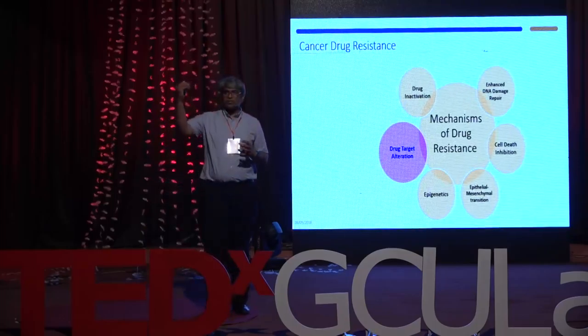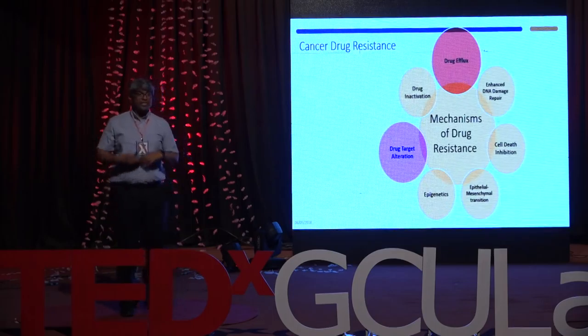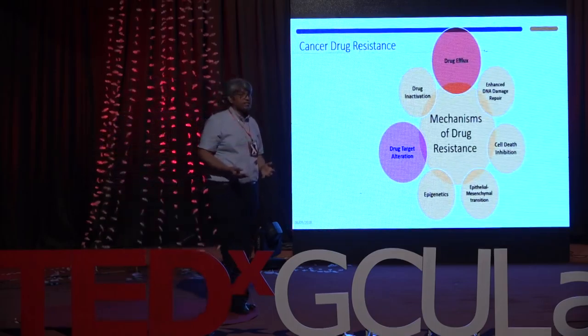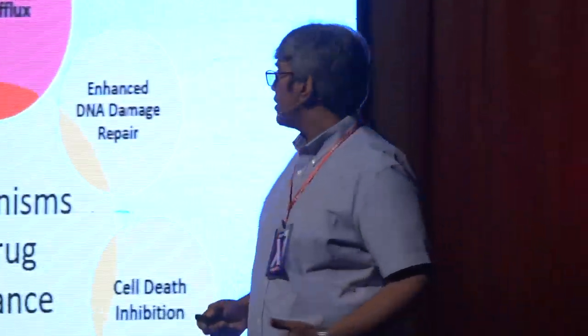There are two main mechanisms by which cancer develops drug resistance. The first is target alteration: cancer cells change the structure of the target protein so the drug can no longer bind to it. The second and most common mechanism is drug efflux: cancer cells over-express pumps at their surface that, as soon as a drug enters the cell, pump it back out — preventing it from reaching its target and killing the cancer cell.